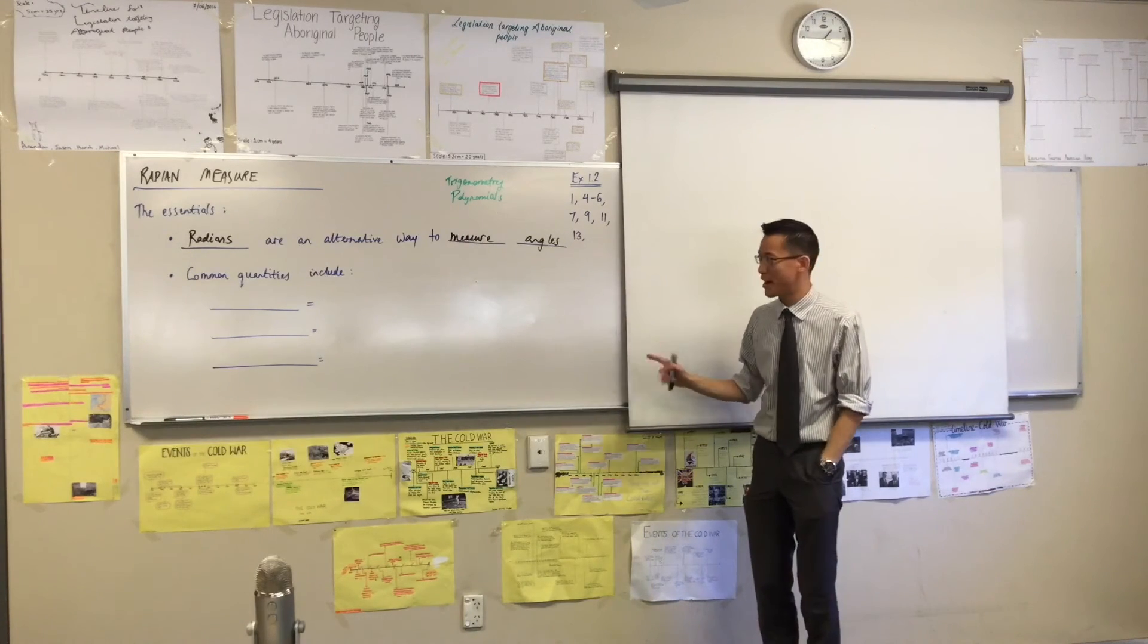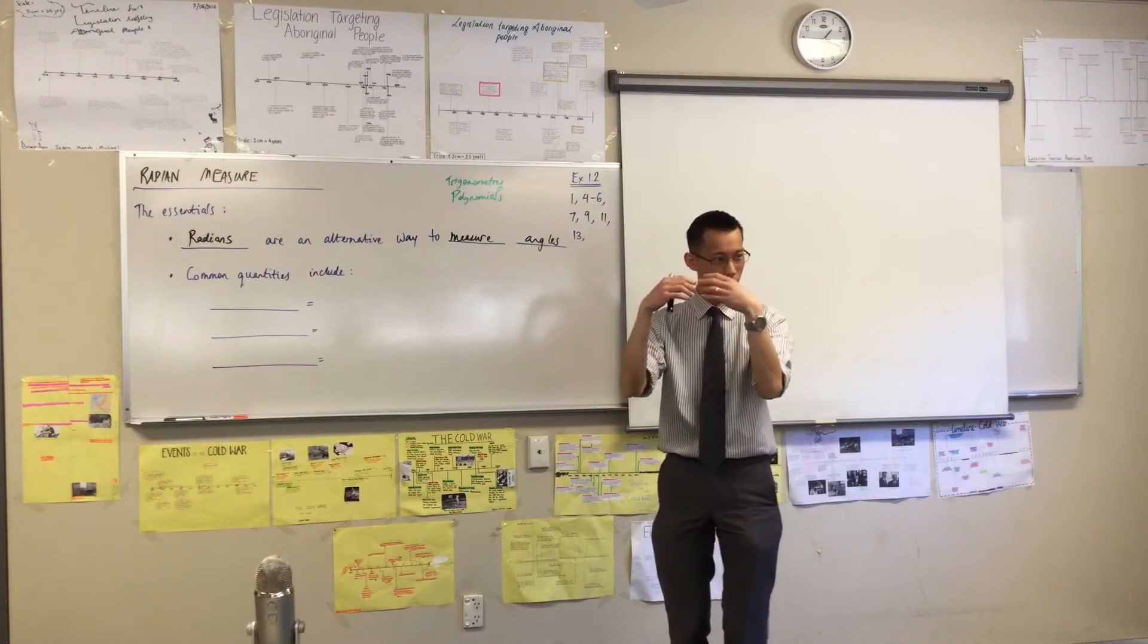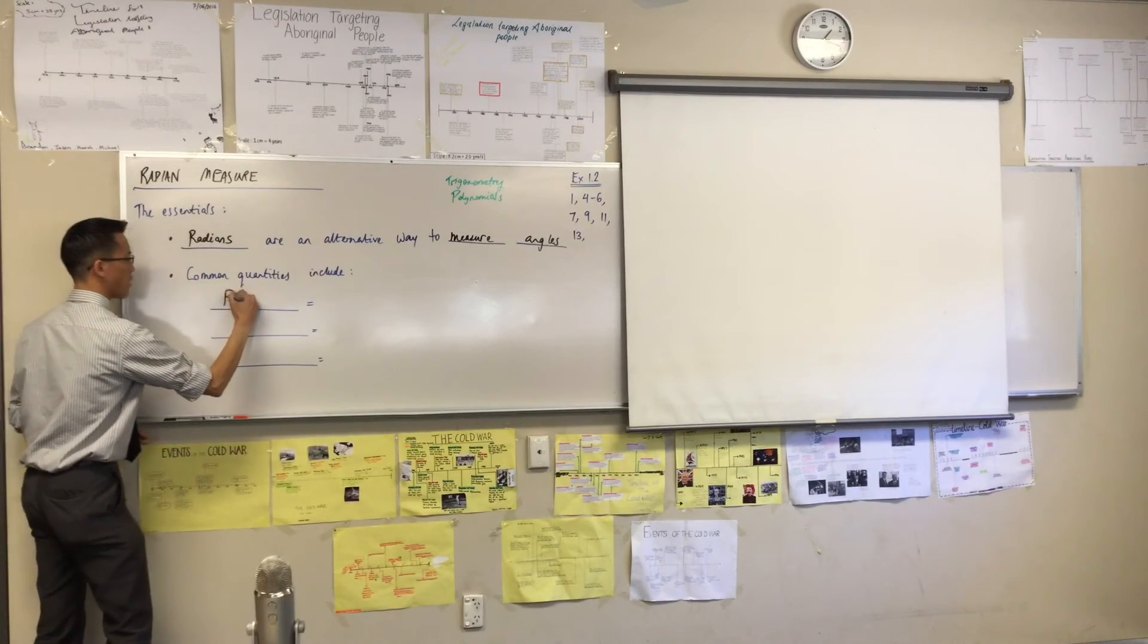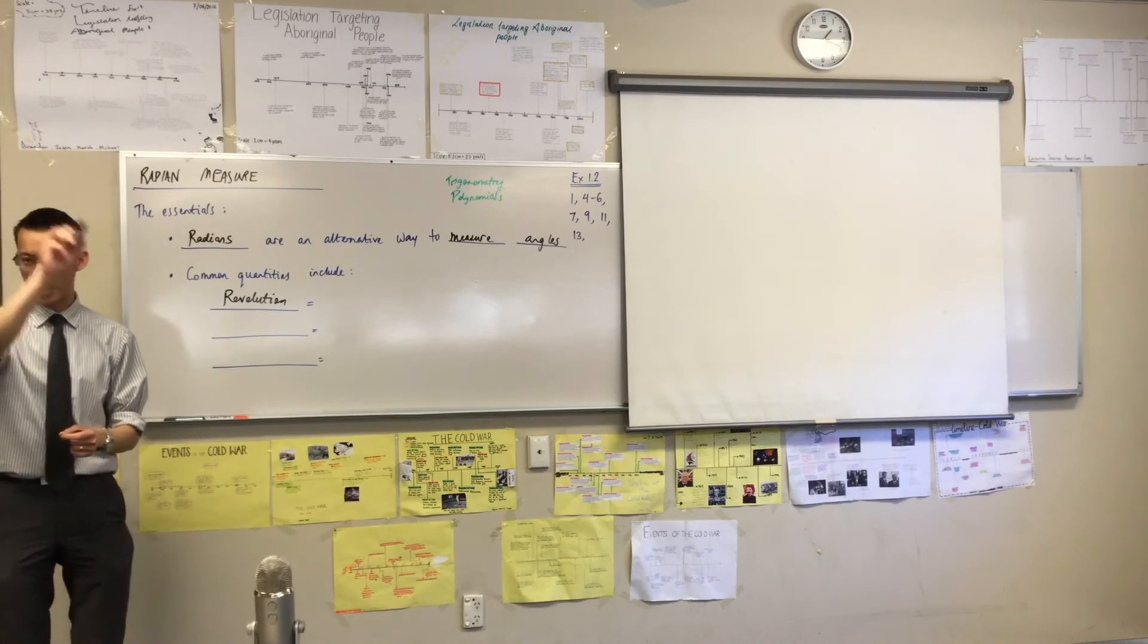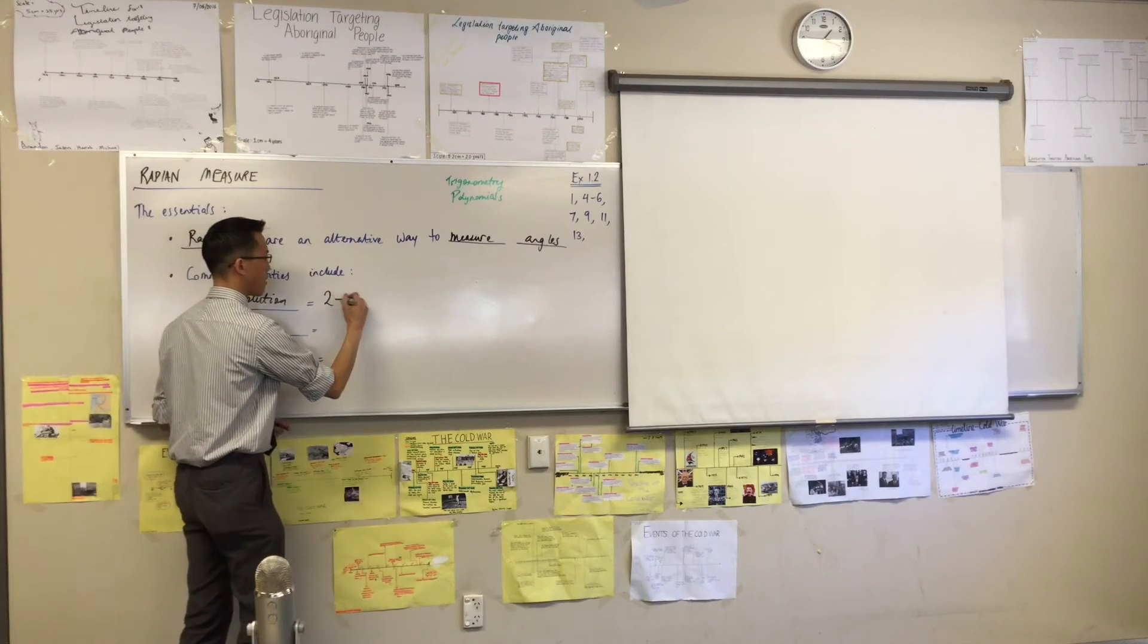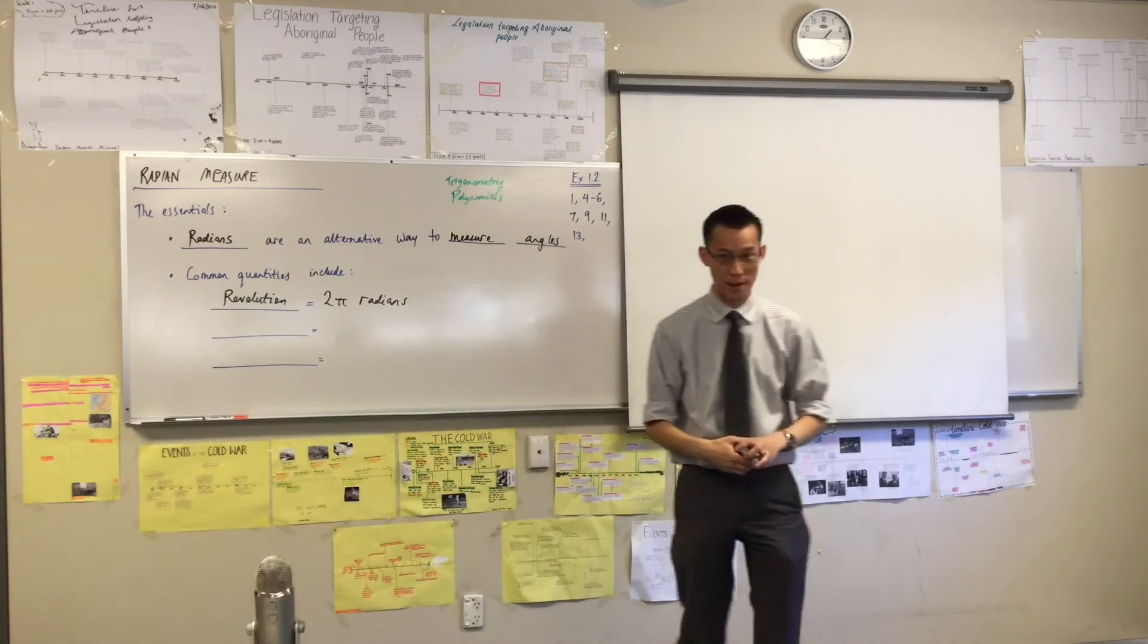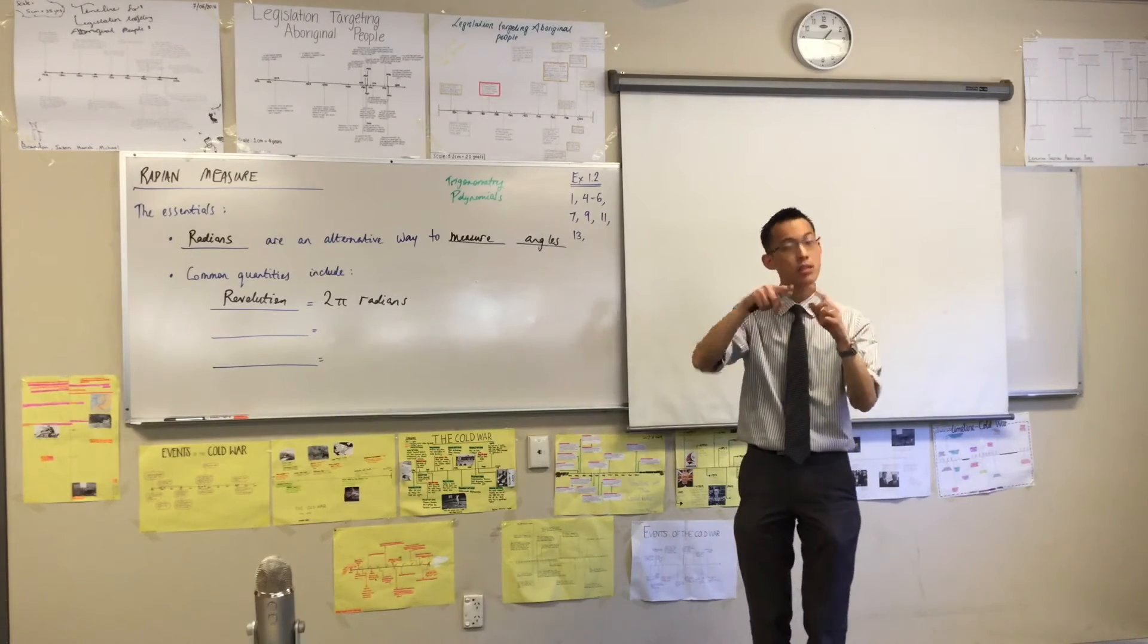Now, because you're probably not comfortable yet, we need to know some common quantities. So when you see a number or a particular kind of angle, you're like, I know what that is in radians. So the most important one you want to start with is a revolution. A full revolution, rather than saying it's 360 degrees to turn all the way around, we would say in radians that's 2π radians. Yes, pi, as in the circle number, pi.